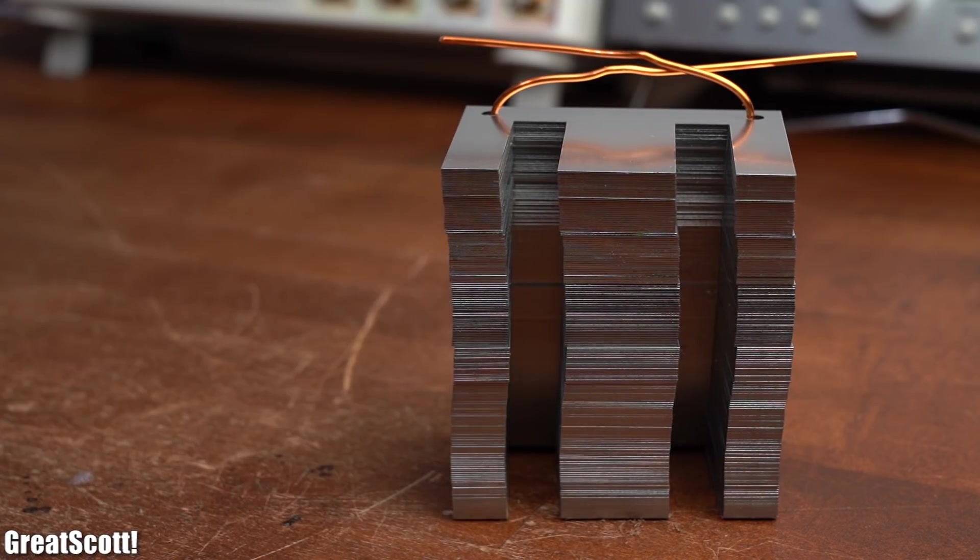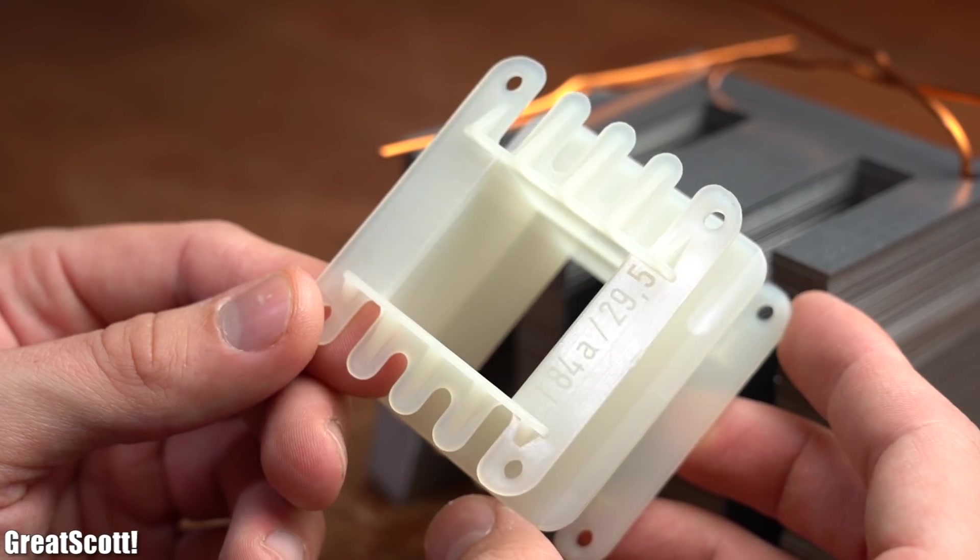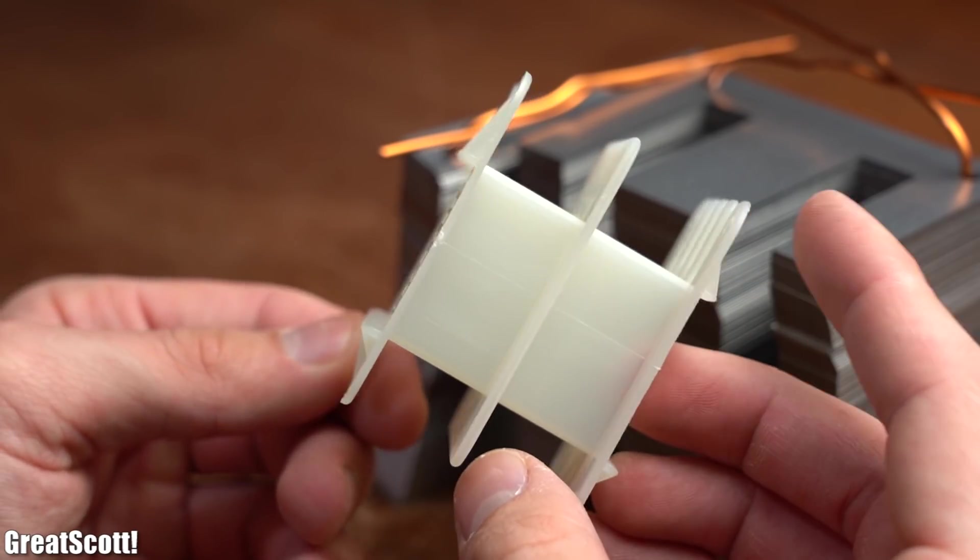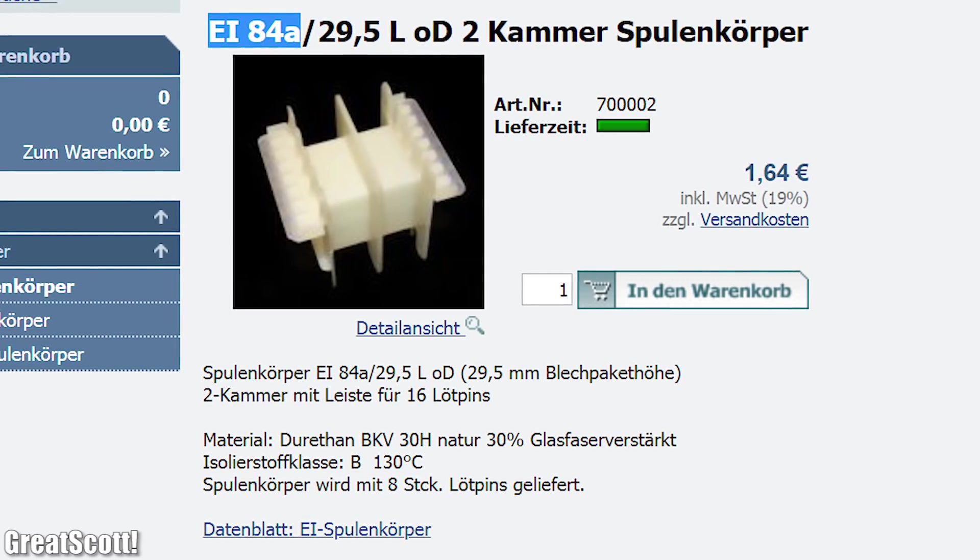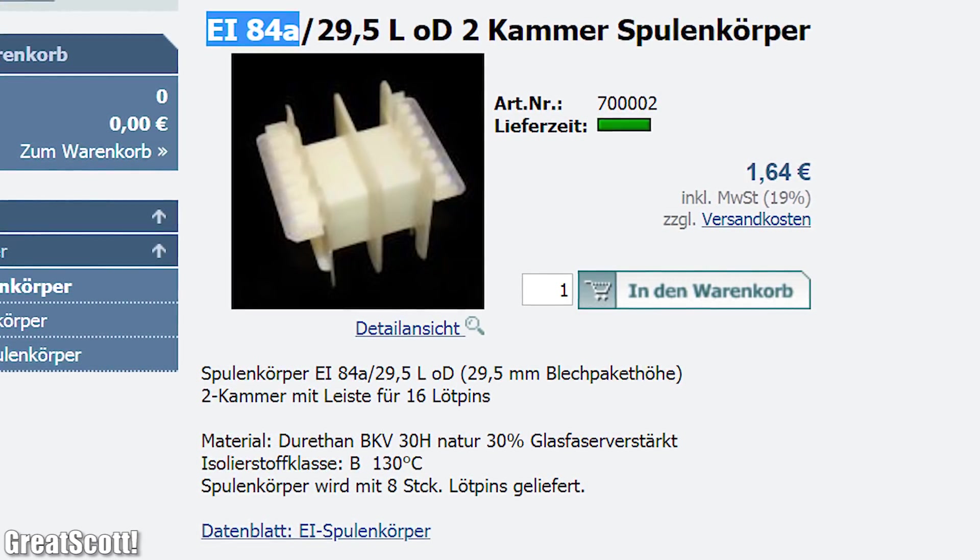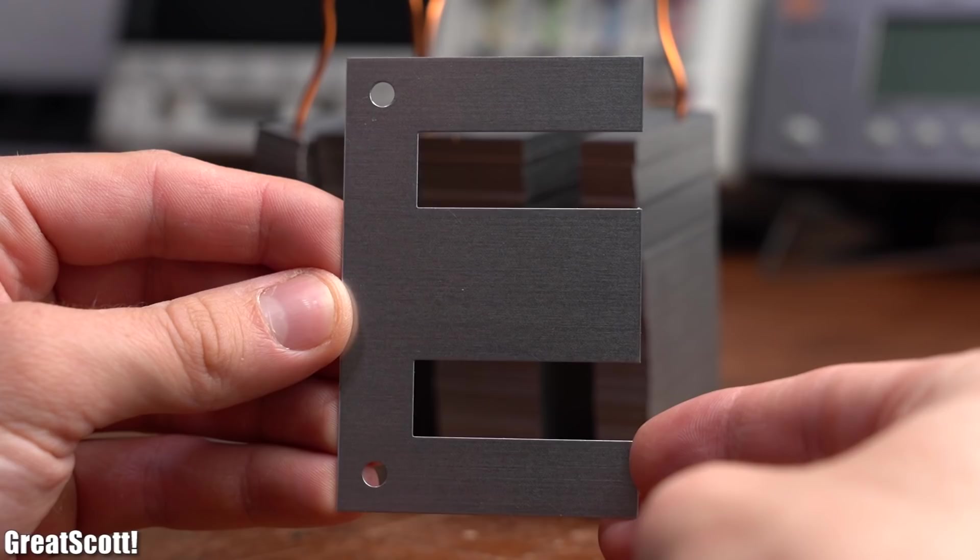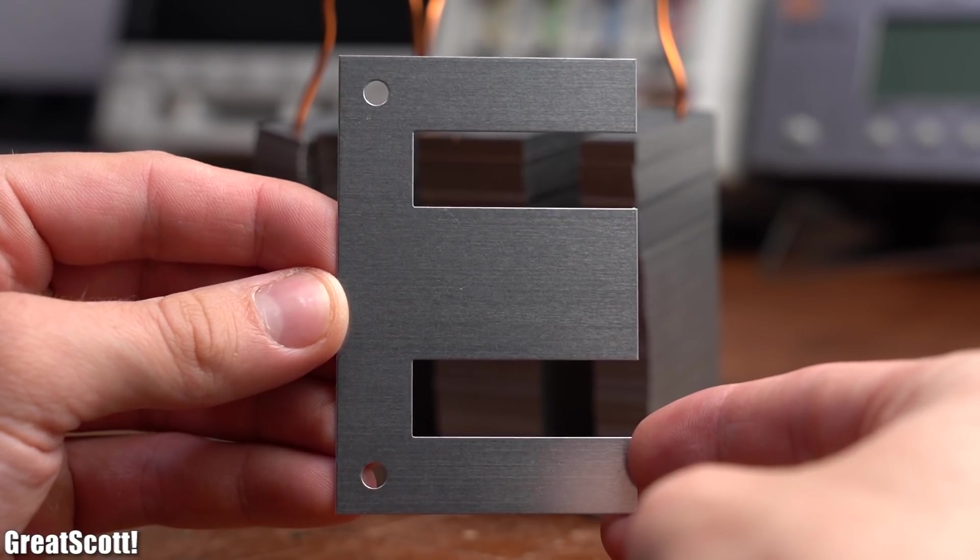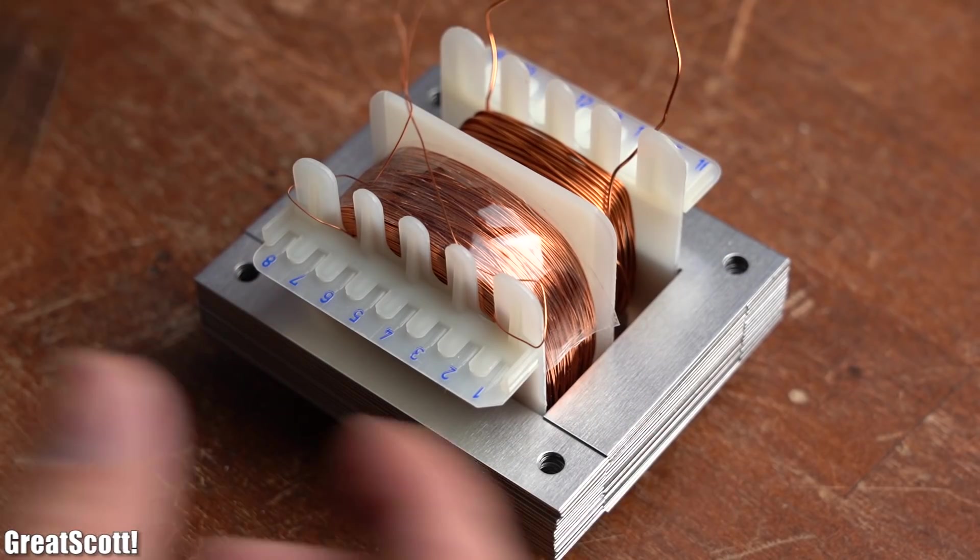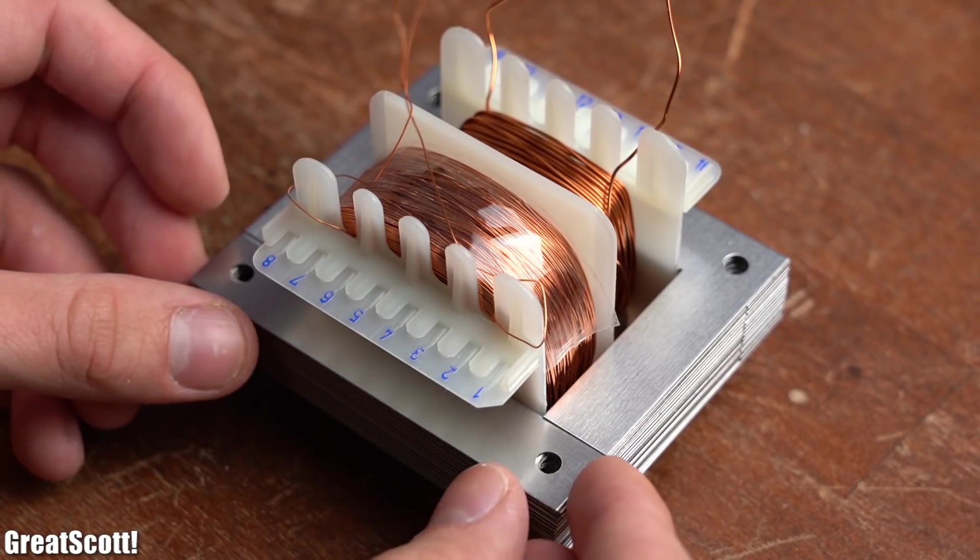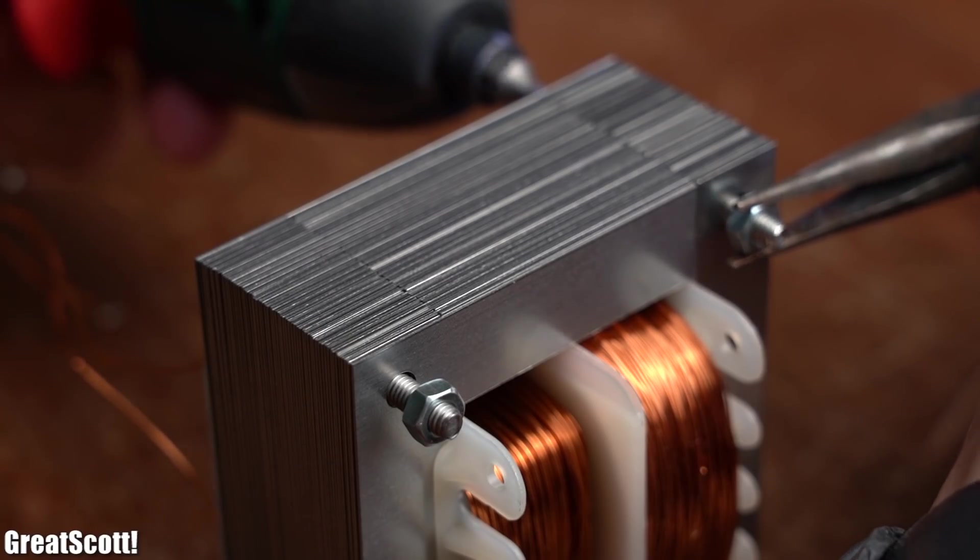A few days after placing my order I received not only the electrical steel sheets but also the fitting coil former. With fitting I mean that the coil former is made for the 84A transformer type and of course my electrical steel sheets are also of this kind. Now these steel sheets have the form of an E and an I which makes it later possible to easily stack them alternating inside the coil former in order to create the transformer core. But we are getting ahead of ourselves.